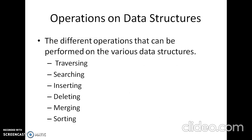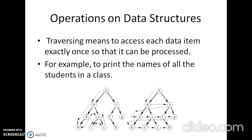We have seen some basic data structures. Now we are going to see different operations that can be performed on these data structures. They are traversing, searching, inserting, deleting, merging, and sorting. The first operation is traversing, which means accessing each data item exactly once so that it can be processed. For example, to print the names of all the students in a class.